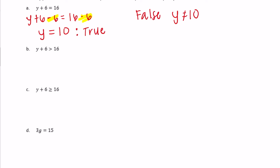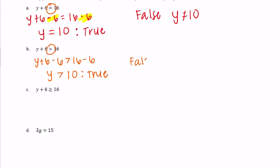Part b: y plus 6 is greater than 16. All we changed is going from equals to greater than. So y plus 6 minus 6 is greater than 16 minus 6, meaning y needs to be greater than 10 for it to be true. For it to be false, y would be less than or equal to 10.